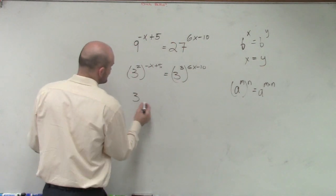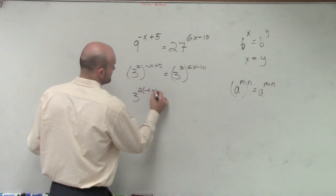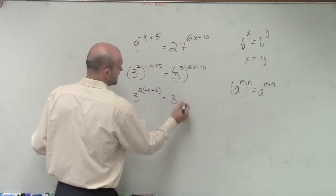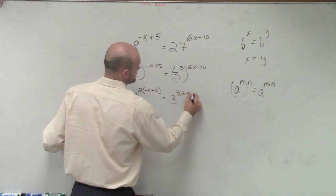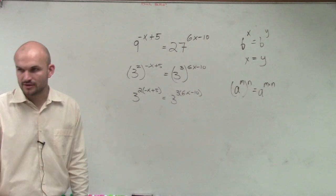So now I need to multiply 2 times negative x plus 5 and 3 times 6x minus 10. So I could say base 3 to the 2 times negative x plus 5 equals 3 to the 3 times 6x minus 10.